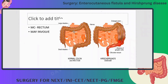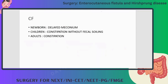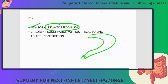This disease most commonly involves the rectum, though it may involve any part of the intestine. Clinical features: in newborns there is delayed passage of meconium — because the obstruction is near the rectum, the newborn is not passing meconium, so you must suspect Hirschsprung's disease. In children there will be constipation with fecal soiling, and in adults there will be constipation alone.